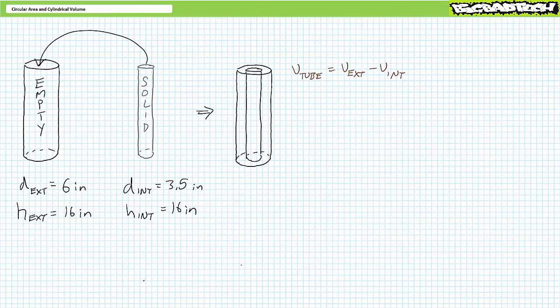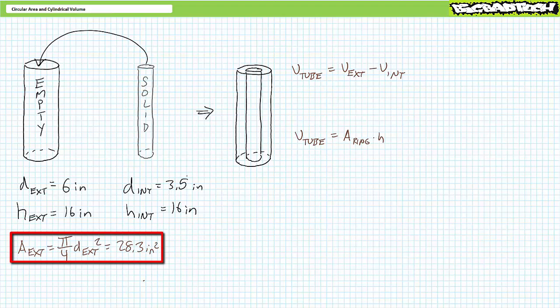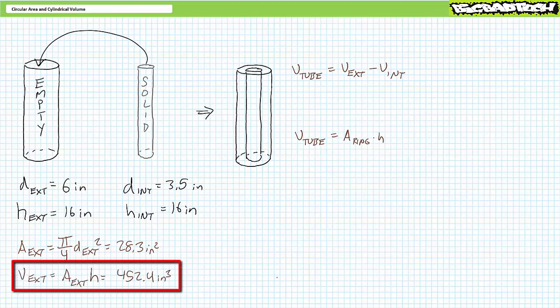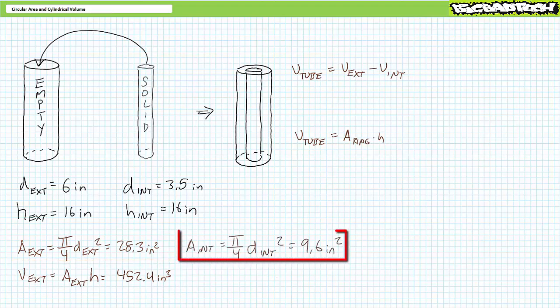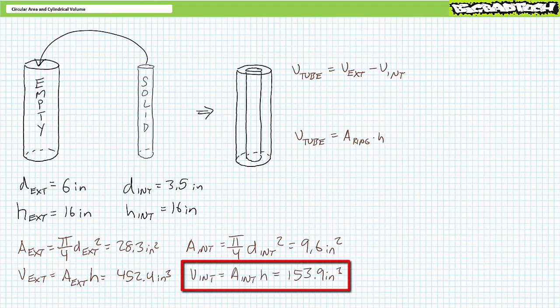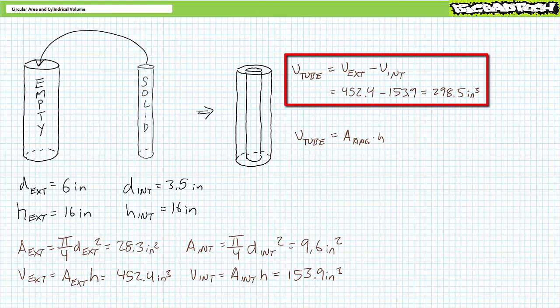If you don't like that technique, here's another way. Think back to the earlier example that examined the area of the ring-like shape formed by overlapping a larger circle and a smaller interior circle. The area of the ring was the area of the outer minus the area of the inner. What if we simply took the area of the ring and multiplied it by height? The larger exterior cylinder has a circular surface area of roughly 28.3 square inches and a volume of roughly 452.4 cubic inches. Similarly, the smaller interior cylinder has a surface area of roughly 9.6 square inches and a volume of roughly 153.9 cubic inches. The volume of the tube is the exterior minus the interior, which demonstrates the volume of the remaining tube-like space is approximately 298.5 cubic inches.